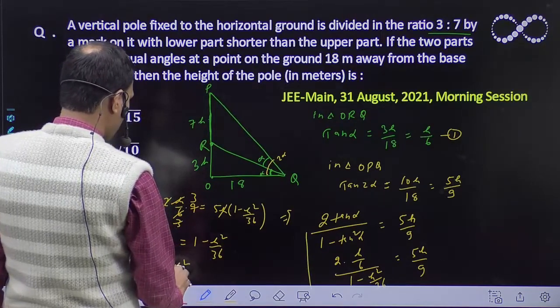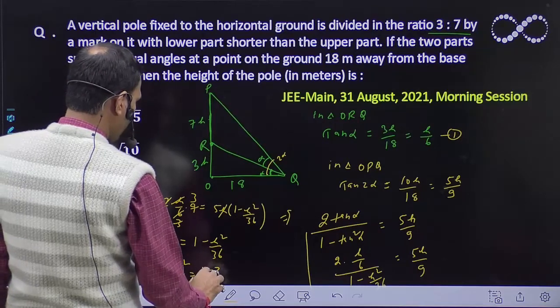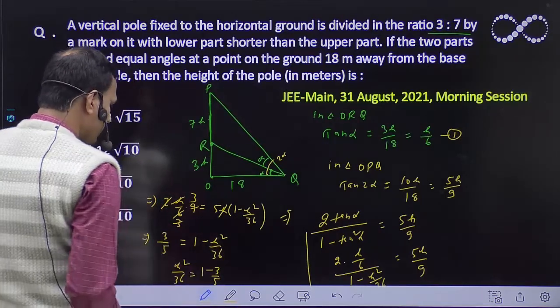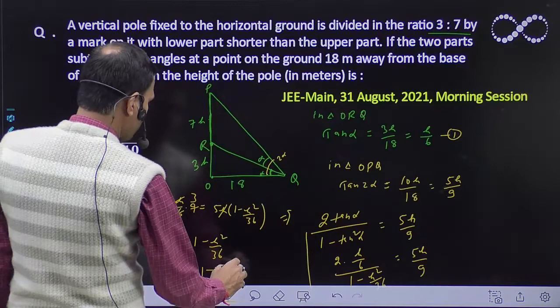Now let's solve this. 2 into h by 6 into 9 after cross multiplying. 2 becomes 3, and this becomes 3. From h, h cancels. So 3 by 5 equals 1 minus h square by 36.